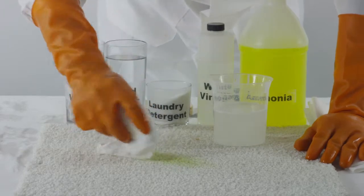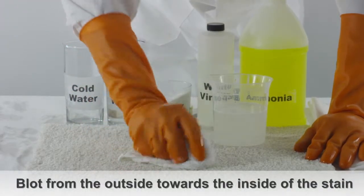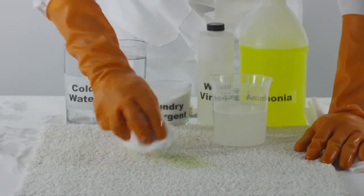Dip a clean towel into the detergent and water mixture, and begin blotting from the outside of the grass stain, working your way in towards the center.